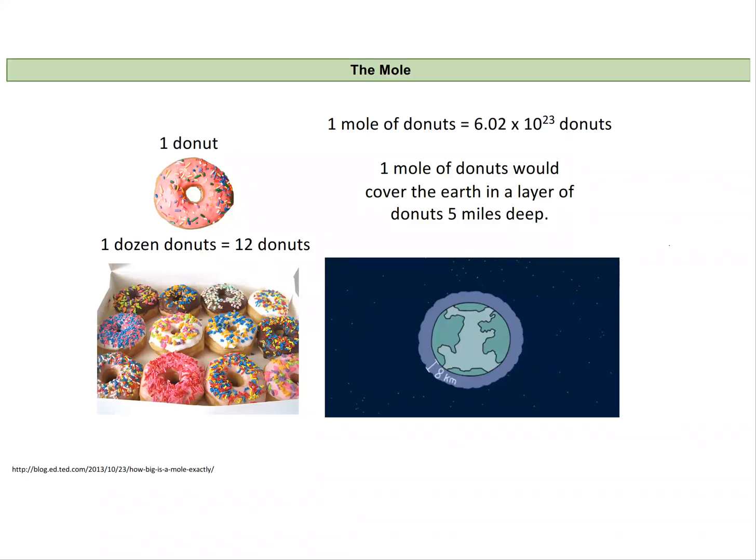If I have one donut I have one donut. If I have one dozen donuts I have 12 donuts and I'm much happier. So this word dozen really means 12. Similarly a mole is going to be a counting number like dozen equals 12. Mole is going to equal 6.02 times 10 to the 23rd which is a much larger number than 12.